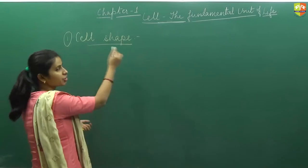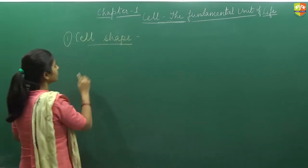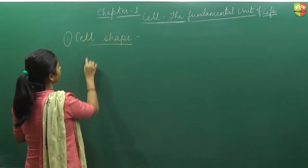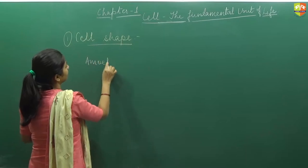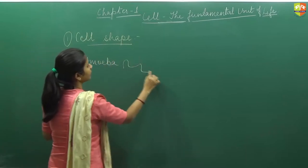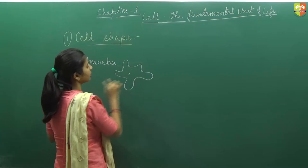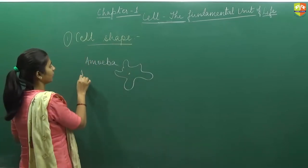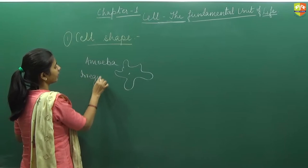In order to study different shape of the cells, first example is amoeba. Now the body of amoeba is irregular, it is a unicellular organism. But what is the shape? Is it regular? No. Then it is known as irregular.